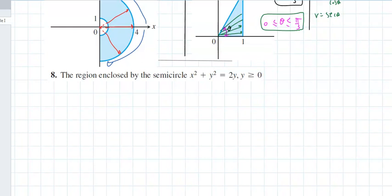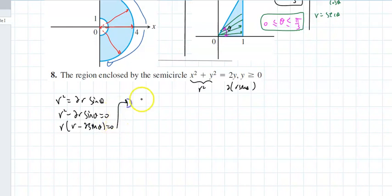Looking at problem number eight: the region enclosed by the semicircle x squared plus y squared where y is greater than or equal to 0. I know this is actually r squared and this is twice y equals r sine theta. So I'm looking at r squared equaling 2r sine theta, or r squared minus 2r sine theta equals 0. If I factor out r, either r equals 0, which is a point, or r equals twice sine theta.